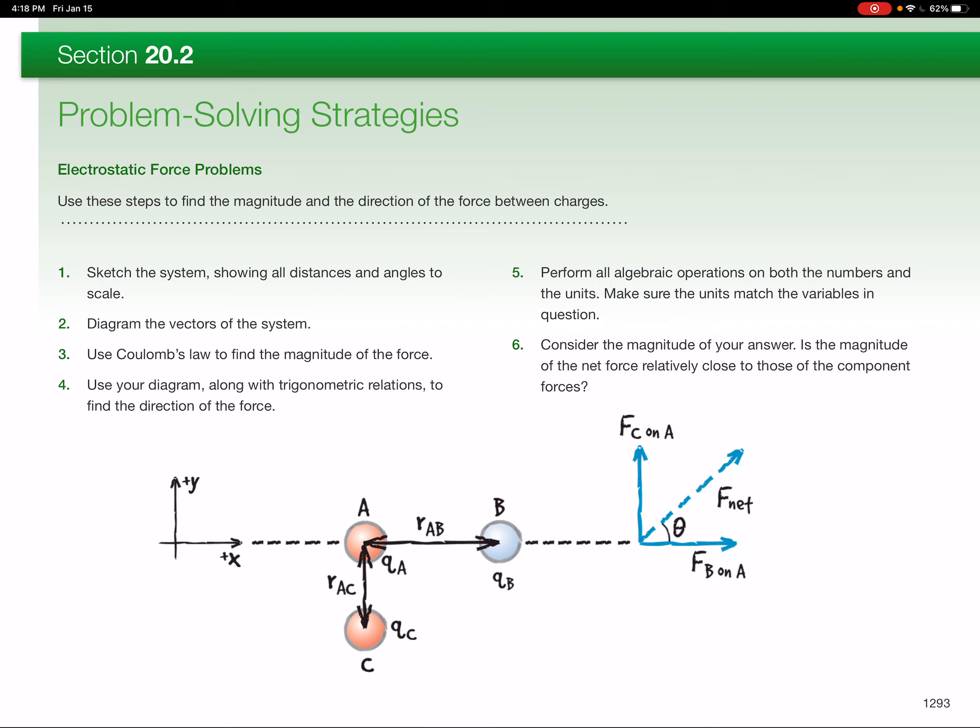Now just look at our problem-solving strategies. So if you have a system of charges, first thing is draw a picture. Now we're only going to do problems where we have charges in a line. We won't have to worry about doing angles and trigonometry for our problems here. But you will need to draw all the vectors. Find the directions of the forces. Use Coulomb's law to find the magnitude of the force. And then, knowing the magnitude and the direction, we can do vector sums to find the sum of all the forces acting on one of the charges.